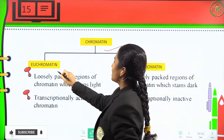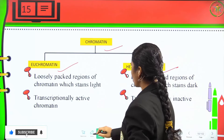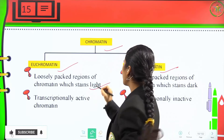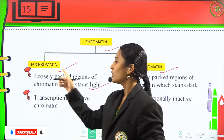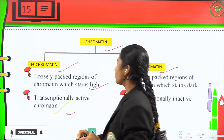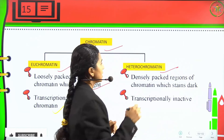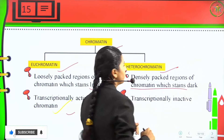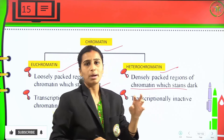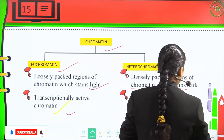Coming to chromatin types — euchromatin and heterochromatin. Euchromatin is the loosely packed region of chromatin that stains lightly; it is transcriptionally active. Heterochromatin is the densely packed region of chromatin that stains dark; it is transcriptionally inactive.